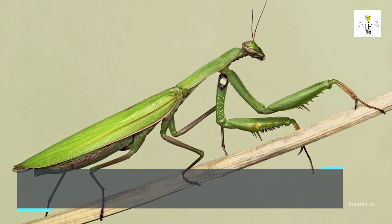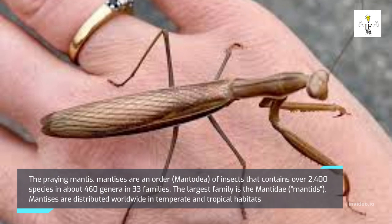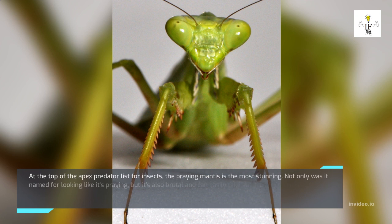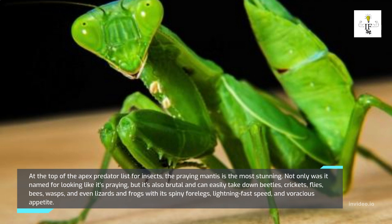Mantises are an order, Mantodea, of insects containing over 2,400 species in about 460 genera and 33 families, distributed worldwide in temperate and tropical habitats. At the top of the apex predator list for insects, the praying mantis is the most stunning. Named for the way it appears to be praying, it is also brutal and can easily take down beetles, crickets, flies, bees, wasps, and even lizards and frogs.